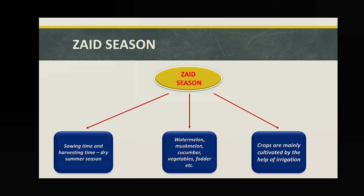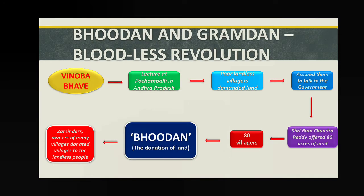Now, Zaid season — it is a very small season of about two to three months maximum. It is the dry summer season, starting from April-May, when temperature is very high but rainfall is very less. Crops cultivated in Zaid season include watermelon, musk melon, cucumber, vegetables, fodder, etc. These crops are cultivated using irrigation because rainfall is very less; sometimes there is thunder-shower rainfall, but mainly we depend on irrigation.